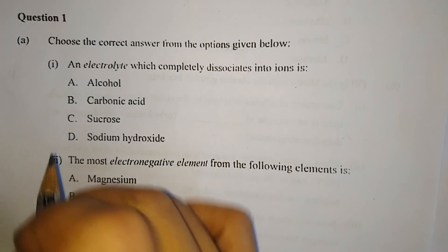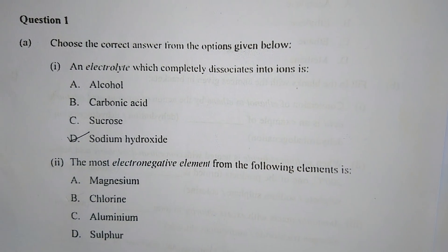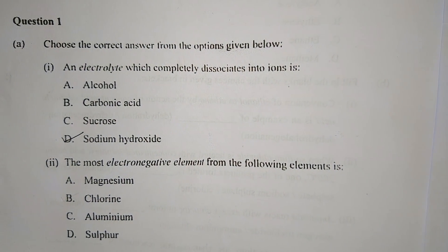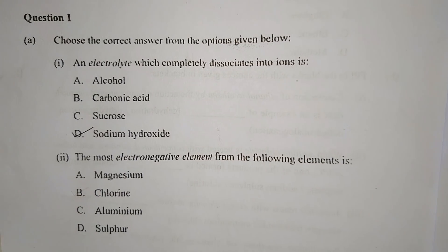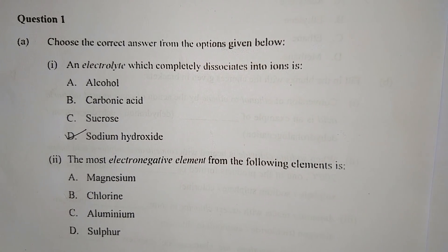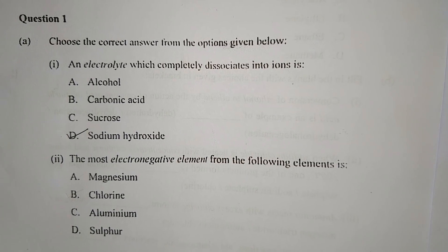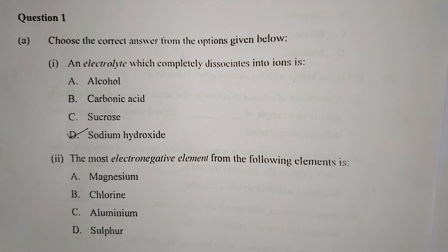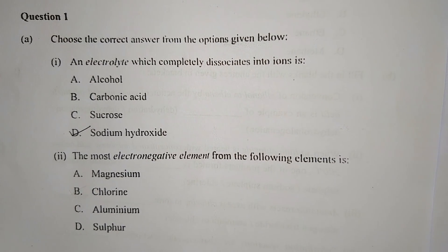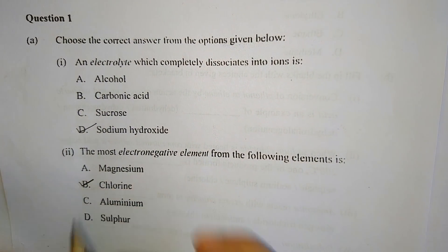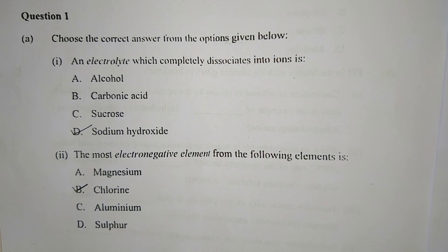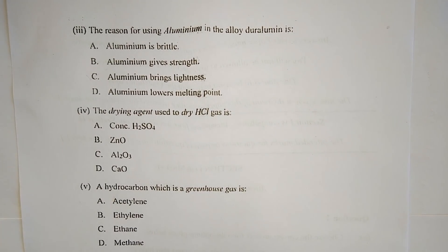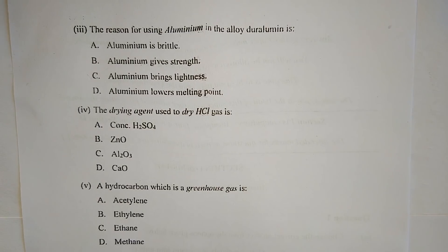Number two: The most electronegative element from the following elements is A. magnesium, B. chlorine, C. aluminium, and D. sulfur. Now we know electronegativity of an element increases while moving from left to right, so B. chlorine will be the right answer.